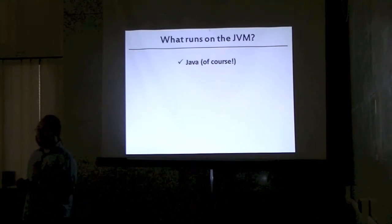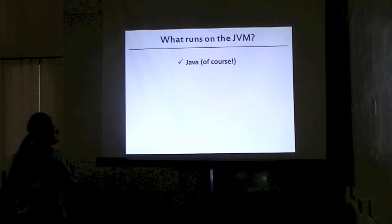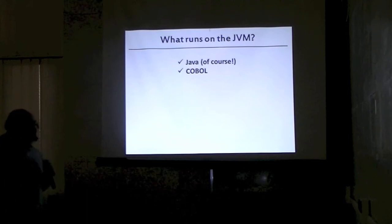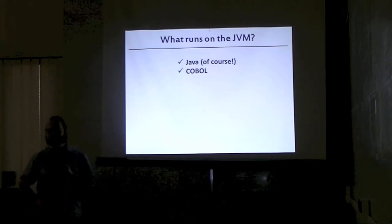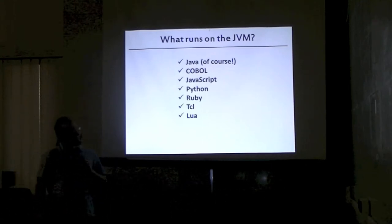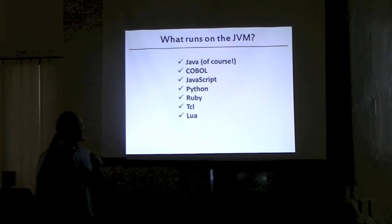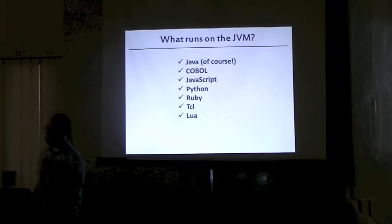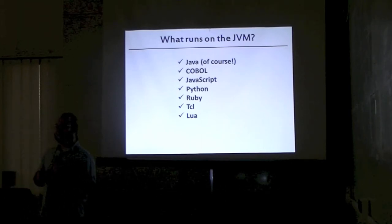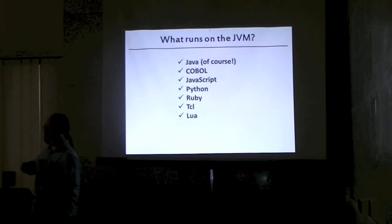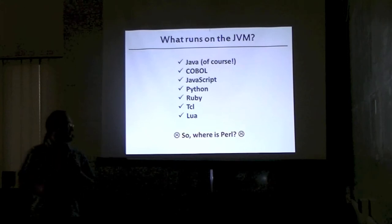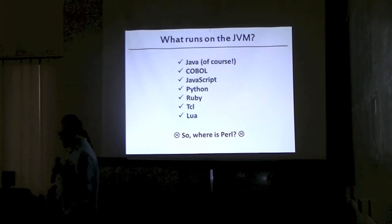So what languages run on the JVM today? Well, Java — duh. Kotlin. Scala. JavaScript. Ruby. Clojure. In fact, JavaScript has a compiler in the works using all the invoke dynamic stuff, and they're hoping to actually be competitive with things like V8. So guess what's not in the list? Perl. Where's Perl?